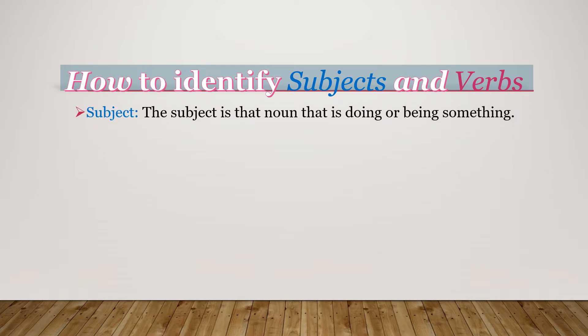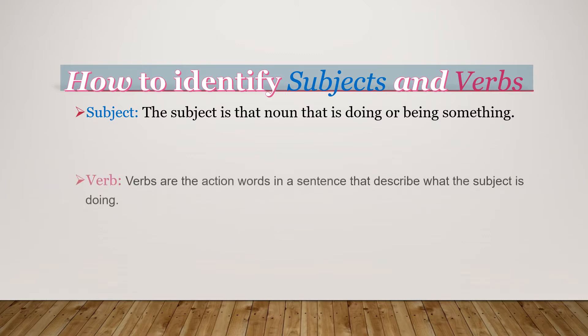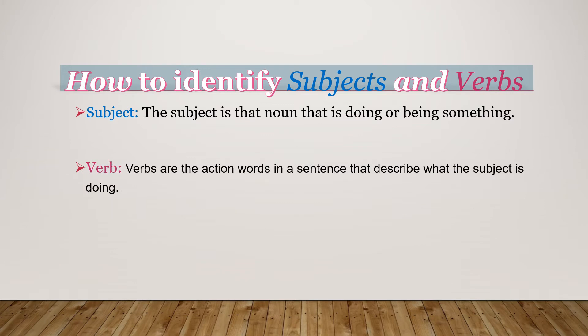What is a subject? The subject is that noun that is doing or being something. The noun is the name of a place, person, or a thing. What is a verb? Verbs are the action words in a sentence that describe what the subject is doing. Verbs are basically action words.